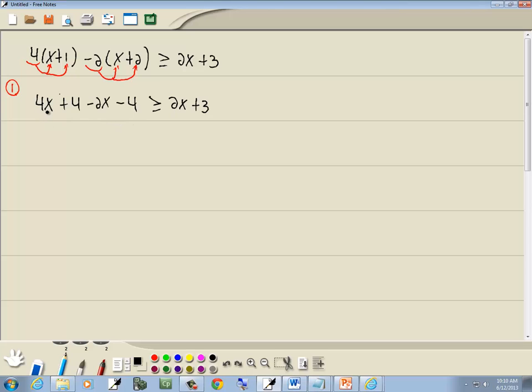At any step, combine together like terms. 4x minus 2x is 2x. Combine together numbers. 4 minus 4 drops away. And greater than or equal to 2x plus 3.